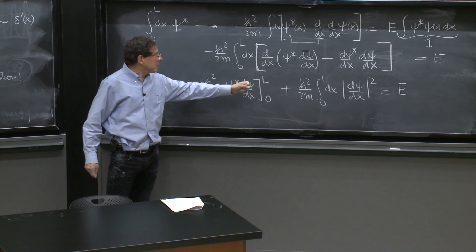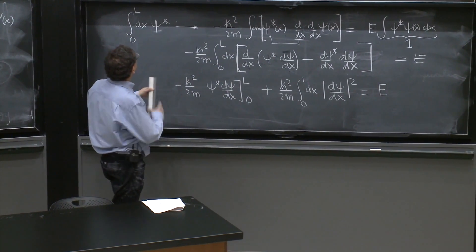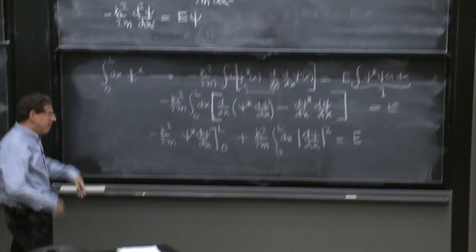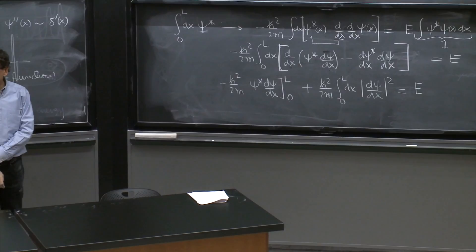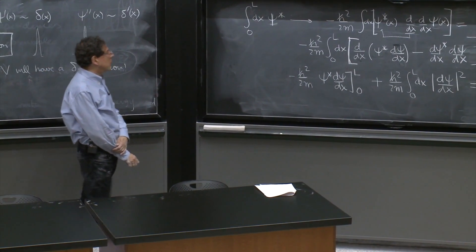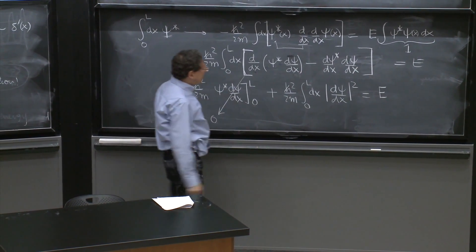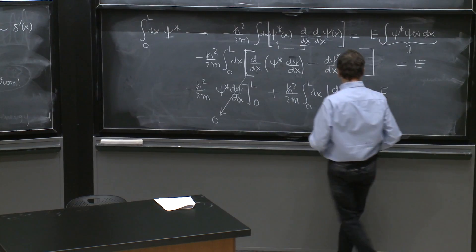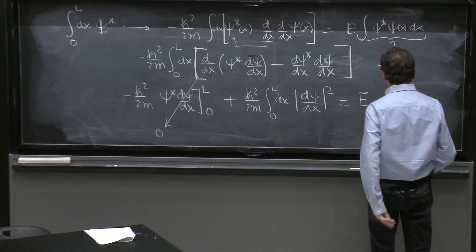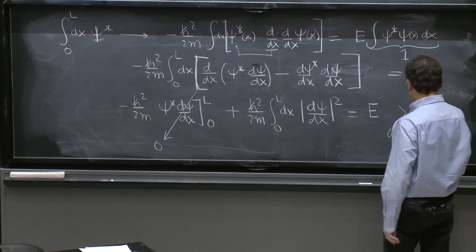Whatever it is, the wave function, the derivative, everything is periodic with L. So whatever values it has at x equals 0, it has at x equals L. So this is 0, and this equation shows that E is the integral of a positive quantity, showing that E is greater than 0, as claimed.